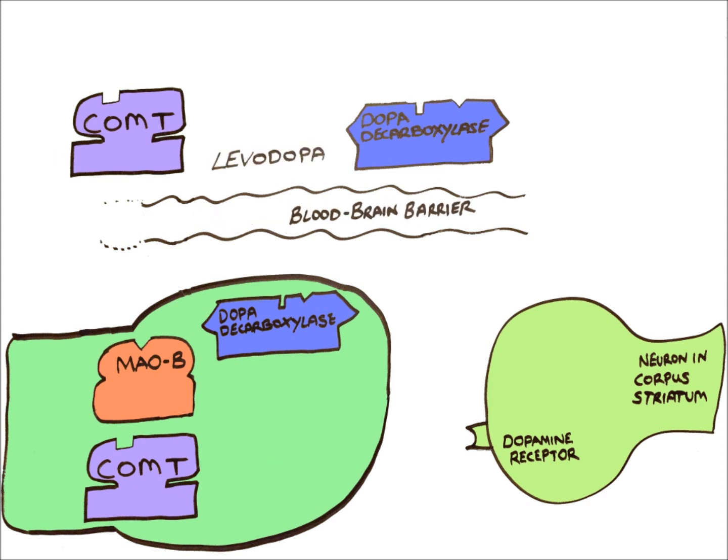In the end, only 5-10% of administered levodopa actually manages to cross the blood-brain barrier. It is then taken up into nigrostriatal dopaminergic neurons, where it is metabolized by dopa-decarboxylase into dopamine. Some of this dopamine will be metabolized by MAOB into 3,4-dihydroxylphenylacetic acid or DOPAC for short, and some will be metabolized by central COMT to 3-methoxytyramine. The end result is less dopamine available to be transported to the dopamine receptor on neurons in the corpus striatum.